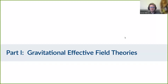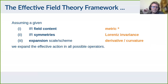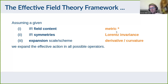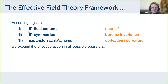Effective field theory is a framework that people apply throughout all different sorts of physics. Here I really mean a fundamental effective field theory of the metric — my field content will be mostly just the metric, although there's some subtlety because there can be higher modes in the curvature scalars. The symmetries will just be the usual Lorentz invariance; I will not talk about Lorentz-violating theories.